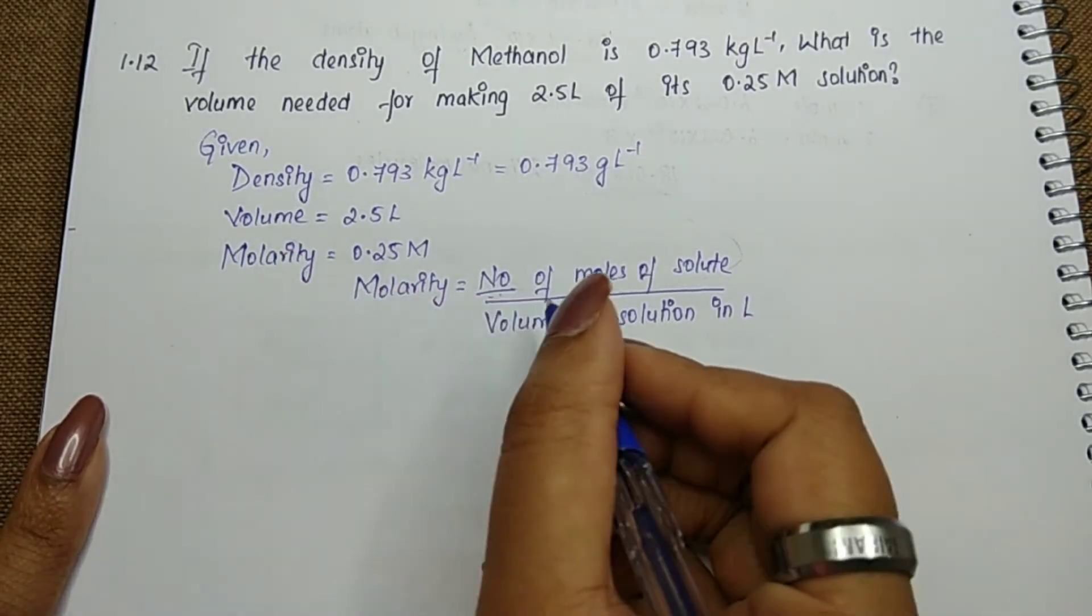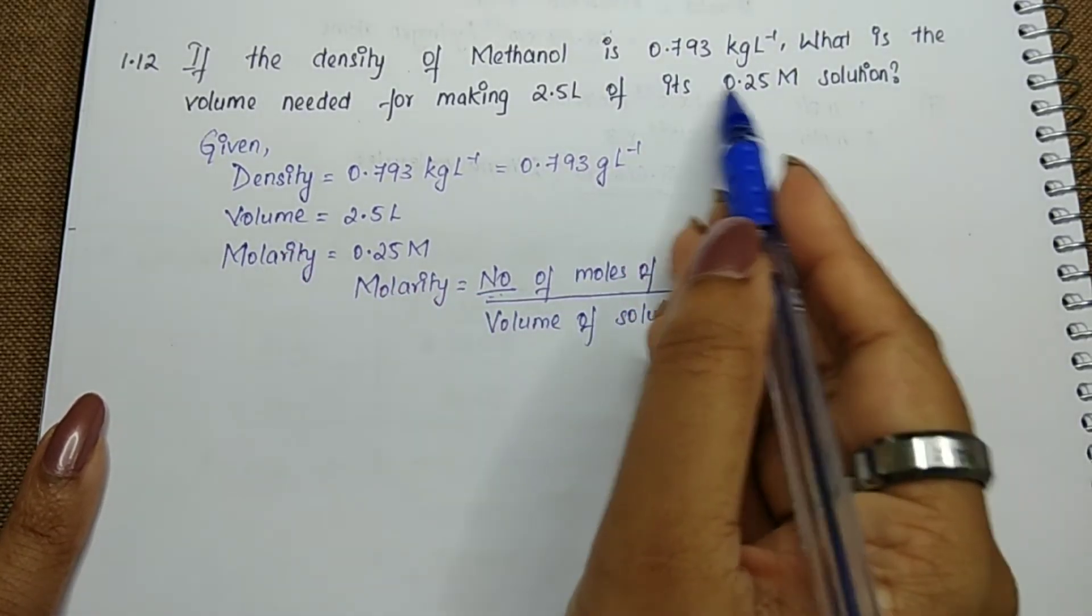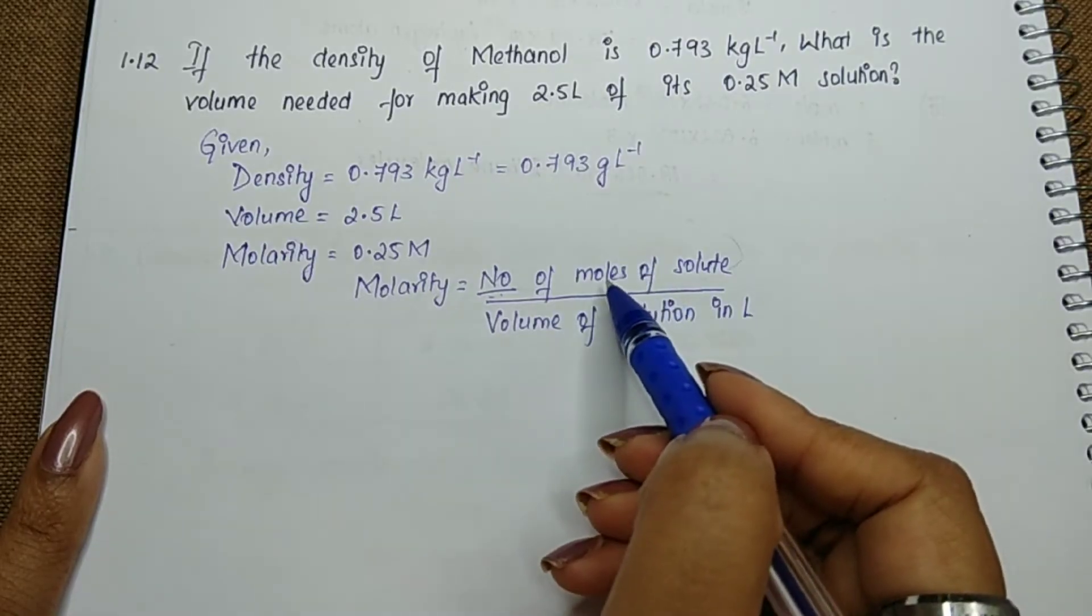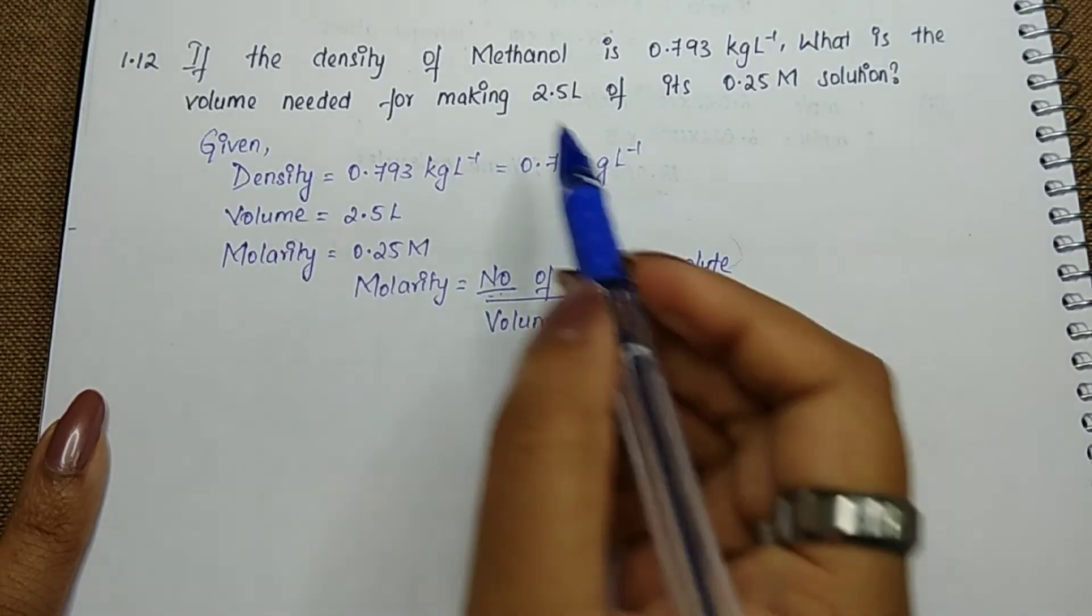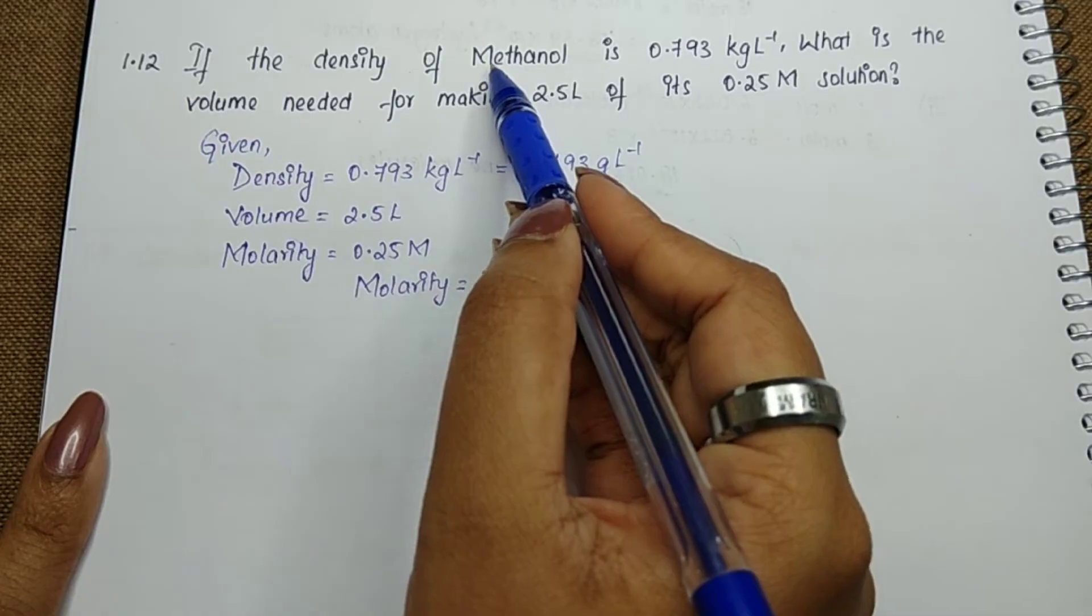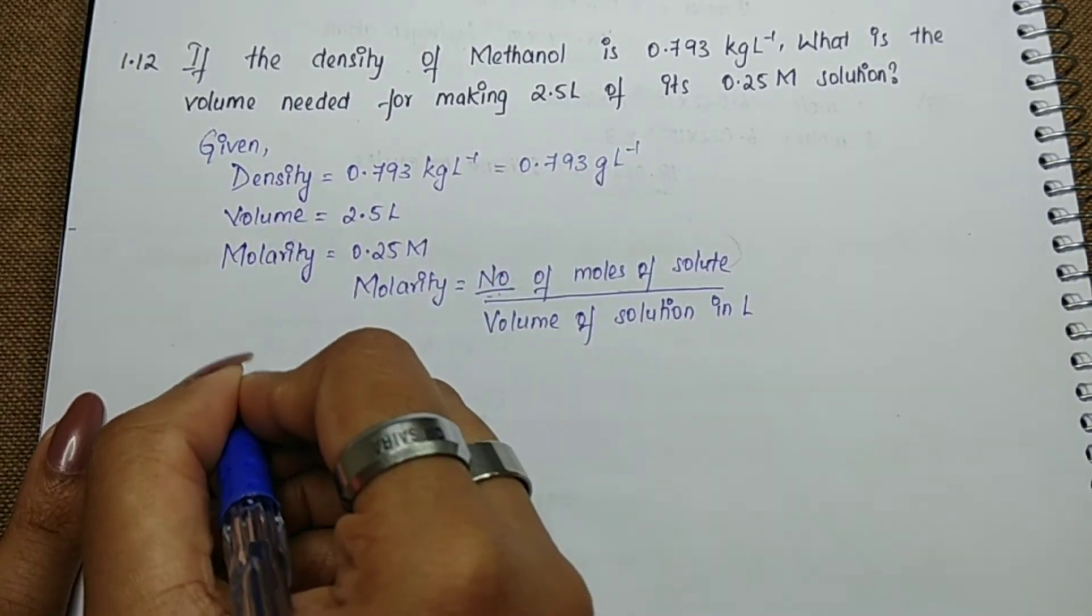Number of moles equals given mass divided by molar mass. Given mass is not given to us—we need to calculate it—but we can definitely find out the molar mass of methanol.